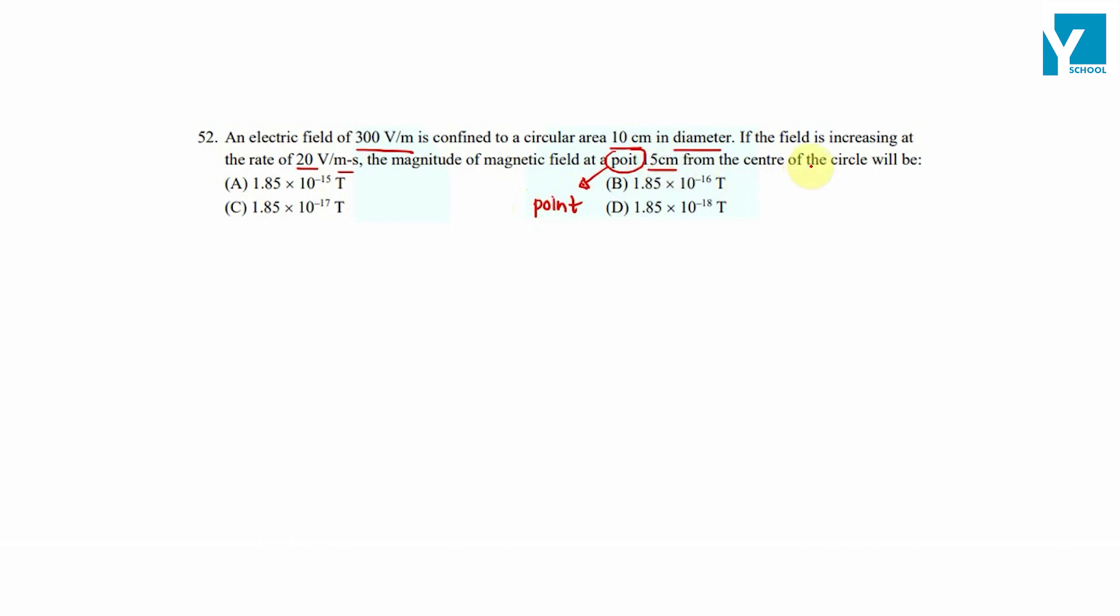15 centimeter from the center of the circle is the question. So we have a circular area. This circle has an electric field that is perpendicular to the plane. Everywhere except for this region, this region has an electric field which is perpendicular to the plane.